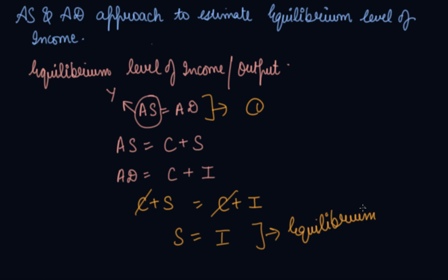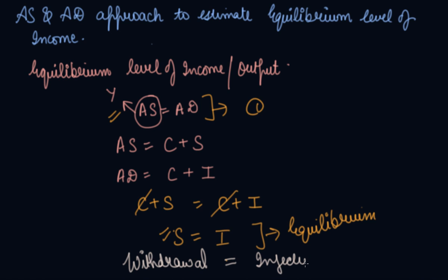We can use two approaches: the AS and AD approach, and the savings and investment approach. The equilibrium level of income is achieved when withdrawals equal injections. Saving is a withdrawal — you are not using your money in the economy to buy goods and services. Injections are things like investment that increase the flow of stock. So equilibrium is attained when AS equals AD, or S equals I, or withdrawals equal injections.